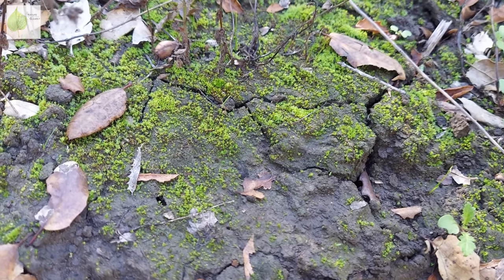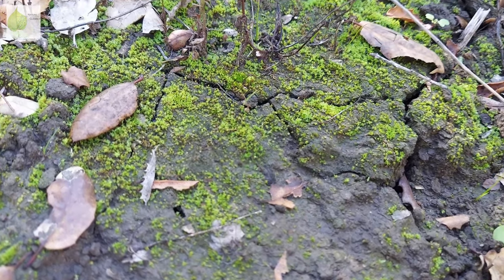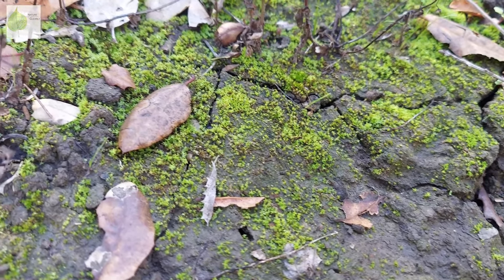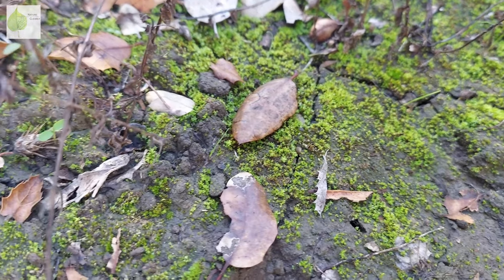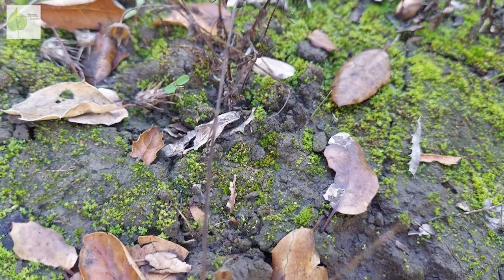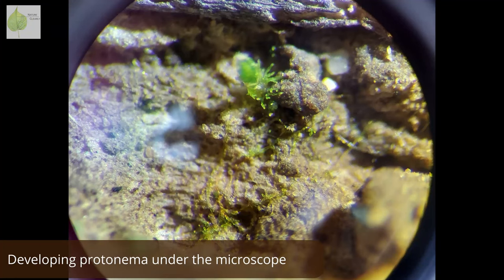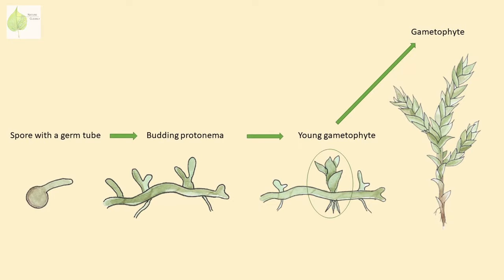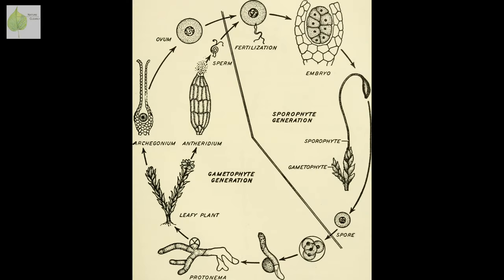If a spore lands in a place with suitable moist conditions, it starts to germinate and develops into a protonema, which is the juvenile form of the gametophyte. The protonema is filamentous and looks similar to green algae. As it continues with its development, the protonema creates buds that eventually grow into the leafy moss form we're familiar with — the gametophyte — and the cycle starts over again.